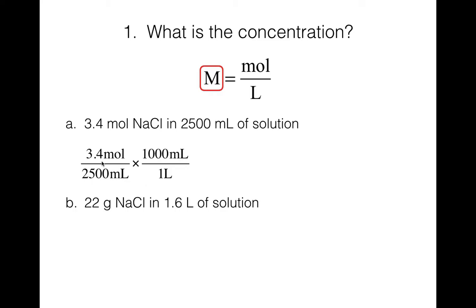When you type this into your calculator, all the numbers on top you multiply, all the numbers on the bottom you divide, and the order does not matter. So you could do 3.4 divided by 2,500 times 1,000, or 3.4 times 1,000 divided by 2,500. Round the answer to 2 sig figs — you'll always check the numbers given in the problem. Here you have 2 sig figs, so the answer is 1.4 molar, or 1.4 mol/L.